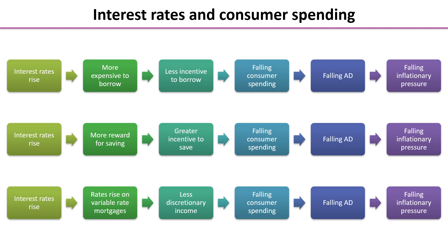The third channel for consumer spending is the effect on variable rate mortgages. If we have a rate rise, we have to pay more each month on our mortgage and will have less discretionary income. Disposable income is income after taxes including benefits; from that, we subtract essential payments like mortgage, rent, council tax, electricity, and gas bills to get discretionary income. With less discretionary income, we spend less in shops and online — so consumption falls, aggregate demand falls, and there is a reduction in inflationary pressure.